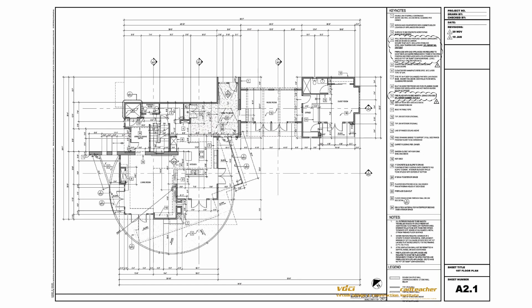Then we start looking at the floor plan. You can see that we have interior elevation call-outs and references to where building sections are cut. We have dimensions and keynotes. We talk about deltaing and bubbling and how information is updated as you're going back and forth with the regulatory agencies. This is the main floor plan — the sheet name is right here and it's page A2.1.